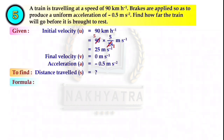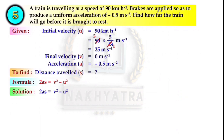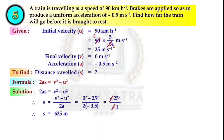We have to find the distance S. The formula is 2aS = v² - u², so S = (v² - u²)/(2a). Putting the values and calculating, we get S = 625 meter. The train travels a distance of 625 meter before coming to rest.